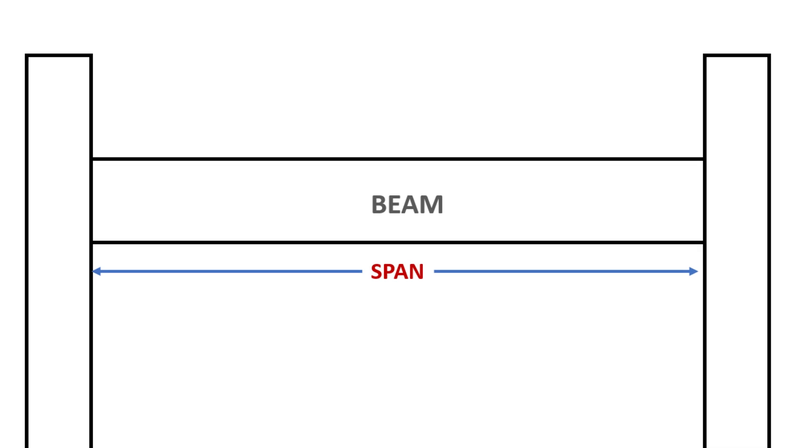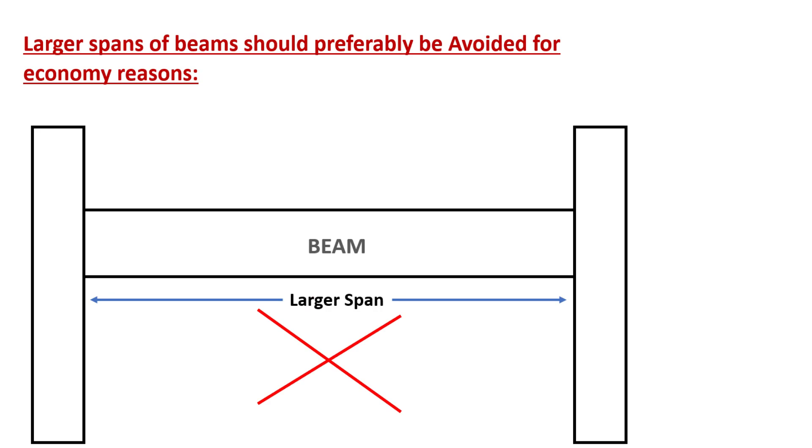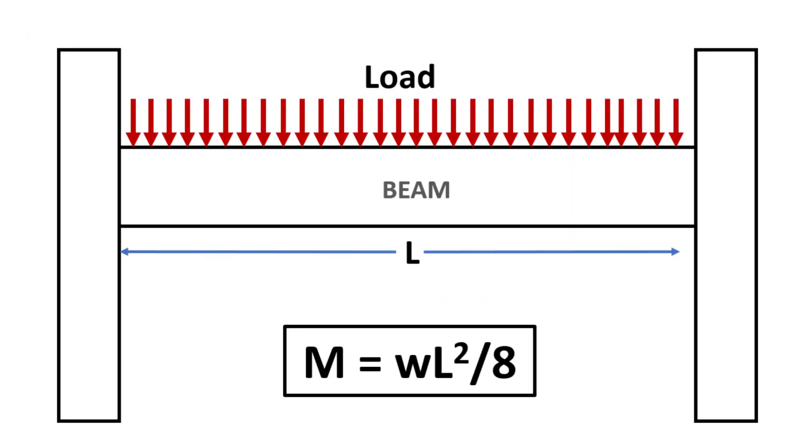Another important consideration is the span of the beams as it affects the size and cost of the beams. Larger spans of beams should preferably be avoided for economy reasons. The span of the beam is determined by the spacing of columns, and when the span becomes larger, the required depth of the beam is also increased, thus increasing its self-weight and the total load. This is because the moment governing the beam design is directly proportional to the square of the span and the load as evident from the bending moment equation.